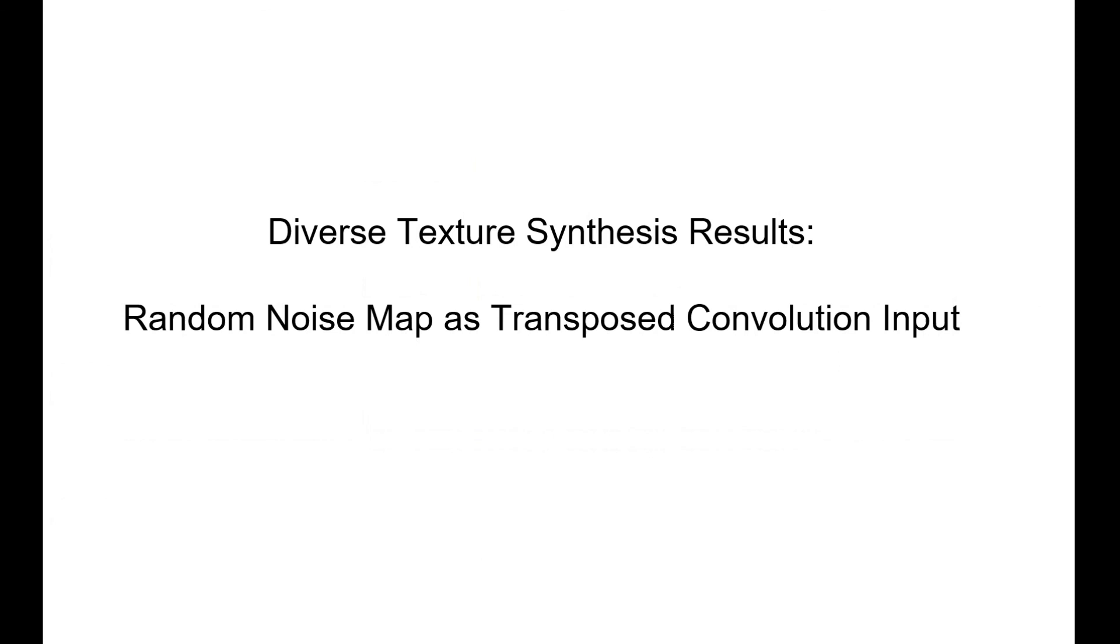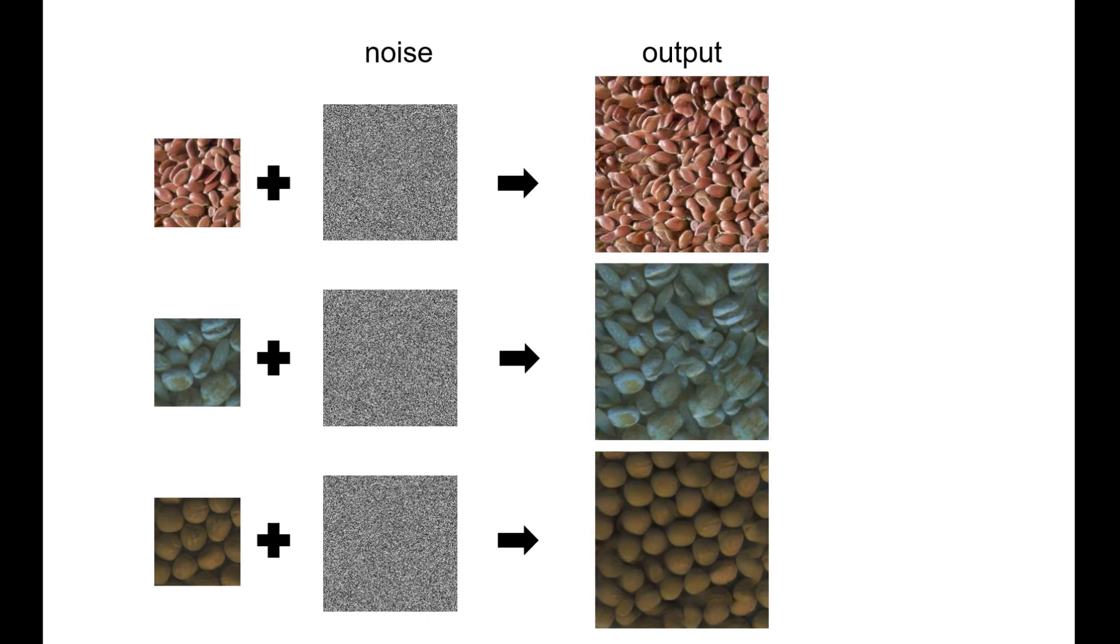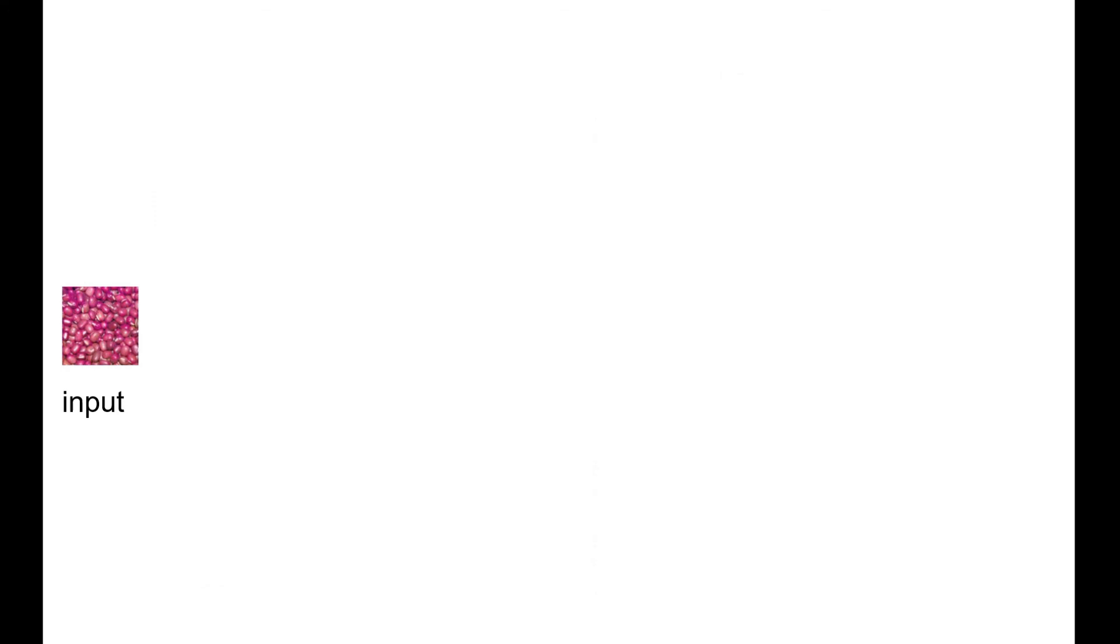For more applications, we can also replace the self-similarity map with a random noise map as the input to generate diverse texture synthesis outputs. By taking different random noise as inputs, we can generate different synthesis results. By sampling a larger noise map, we can also directly generate 1K by 1K output and 2K by 2K output.